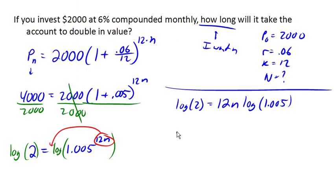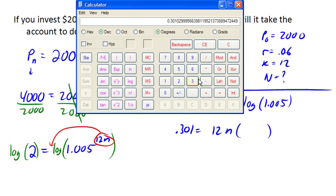So this is 12 times n times, let's see, that's 1.005 log is 0.00217. Remember to keep three significant digits here, so 0.00217. 0.00217.